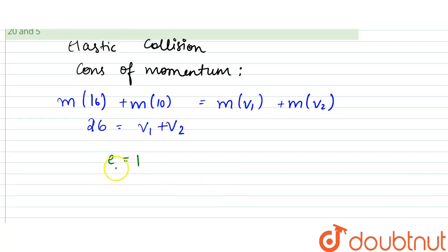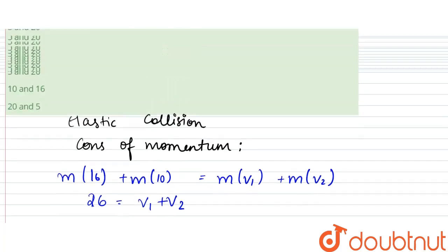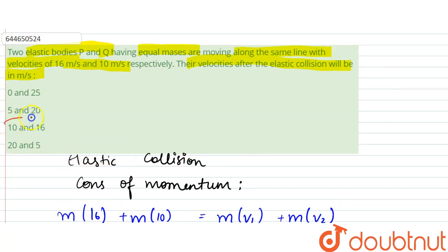...what happens is that the energies get transferred. So v1 was traveling initially with 16 m/s, so v1 would become 10 m/s, and v2 would become 16 m/s. So it would move with 10 and 16, that is option C. Thank you.